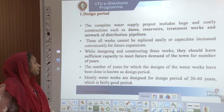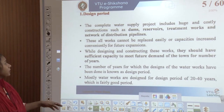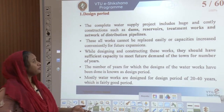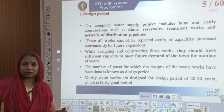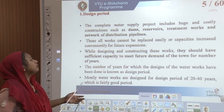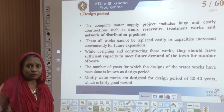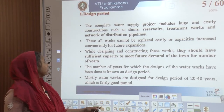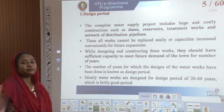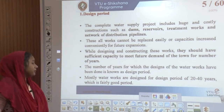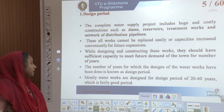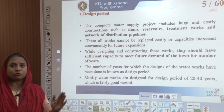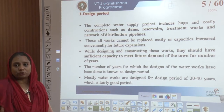This involves determination of the design period, which is basically about how long we are going to work on the construction of dams, reservoirs, treatment works, as well as the network of distribution pipelines. All these works have to be replaceable or have capacities increased conveniently for future expansion. The number of years for which the design of the water works has been done is called the design period, and most water works are designed for a design period of 20 to 40 years.